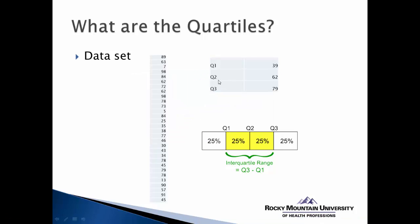The second quartile, also known as the 50th percentile or more commonly the median score, is associated with a test score of 62. And the third quartile, also known as the 75th percentile, is associated in this instance with a score of 79.